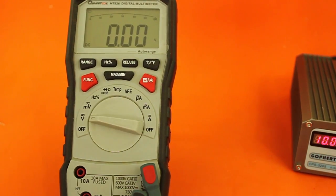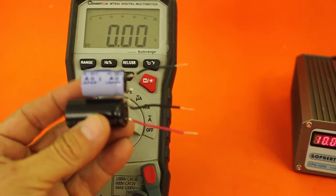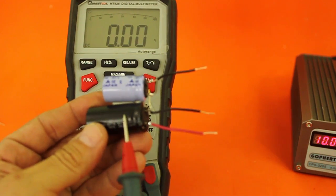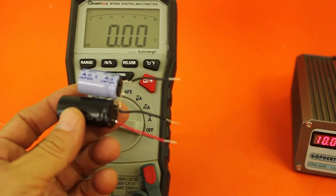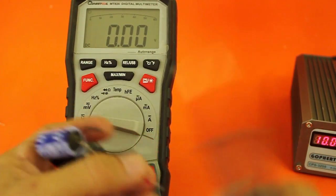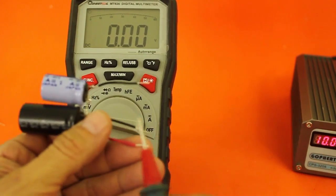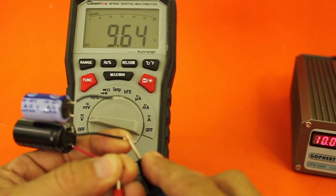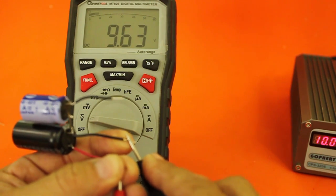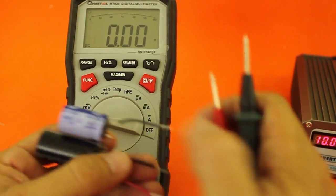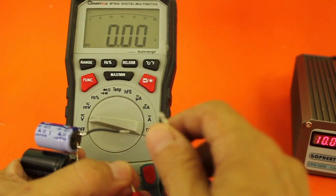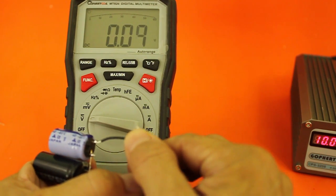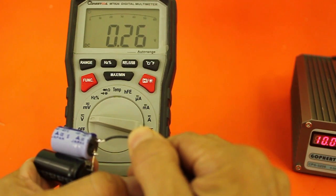Now, if we check the voltages that remain in the capacitors, let's see. This was at 1.5 volts. And now, after connecting the lamp, it is at 9.64 volts. Almost all the voltage, which was 10 volts. And the other only has 0.26 volts.